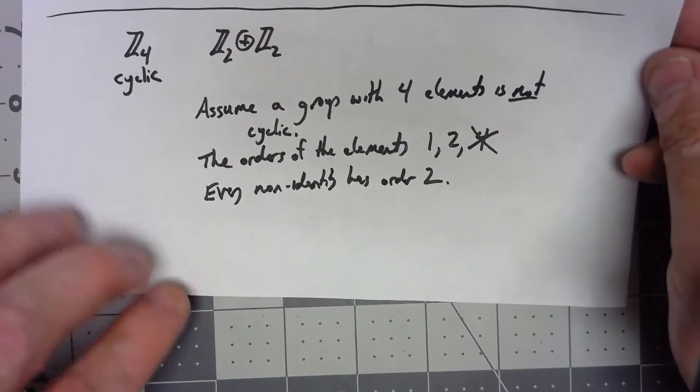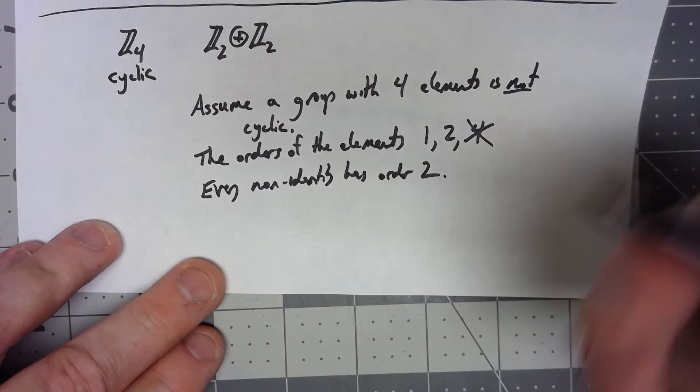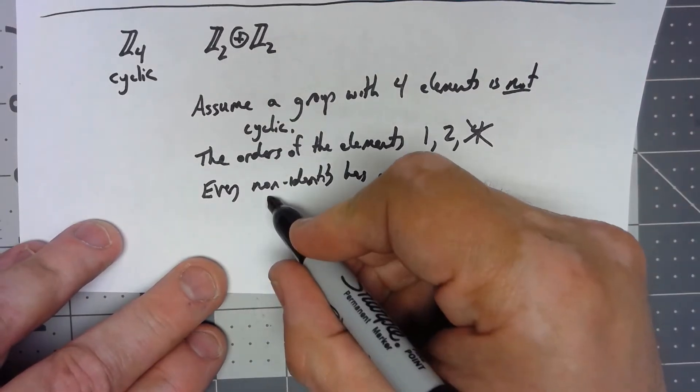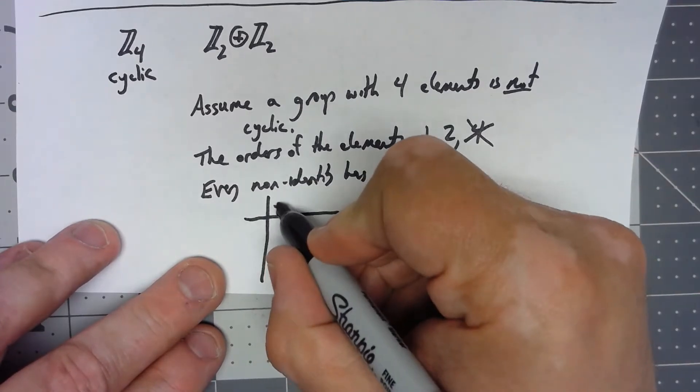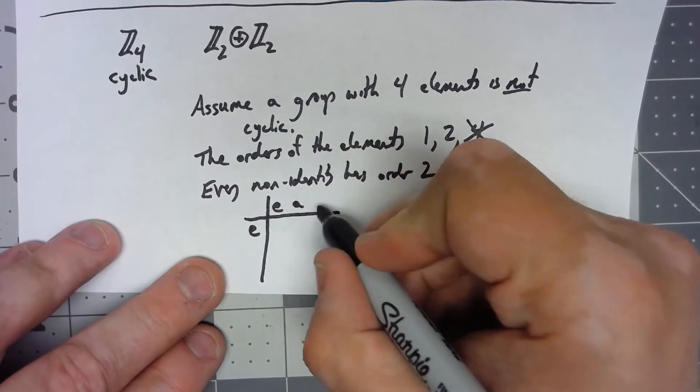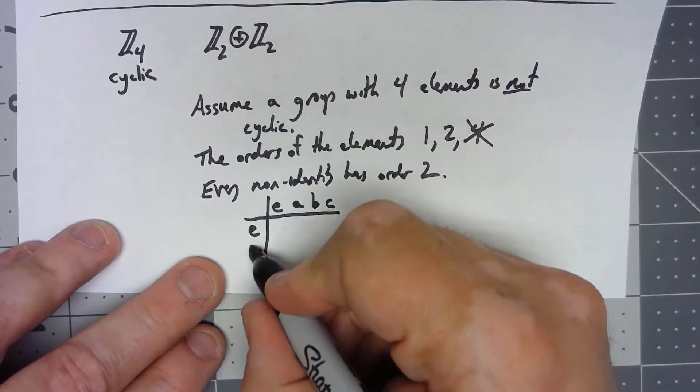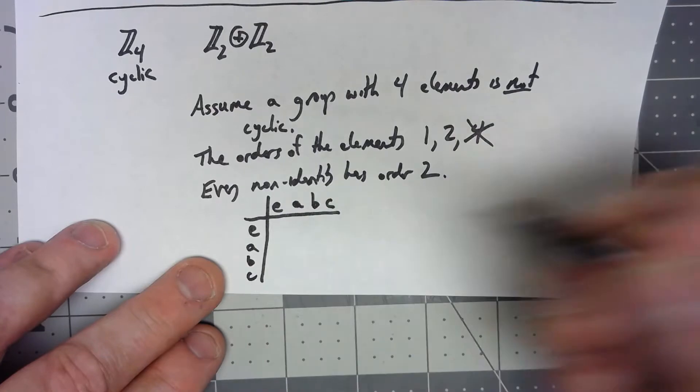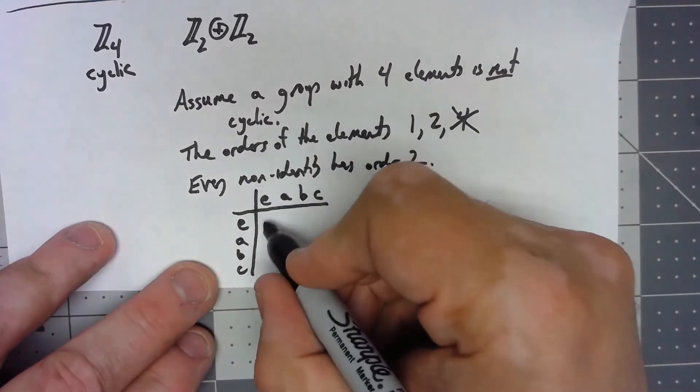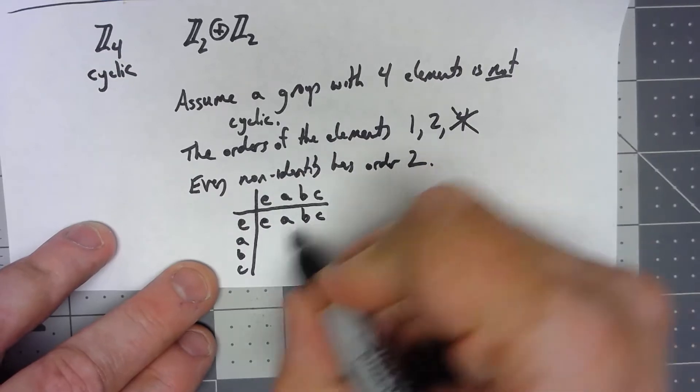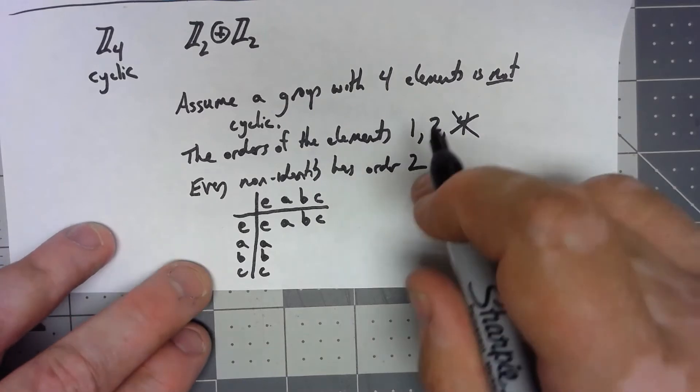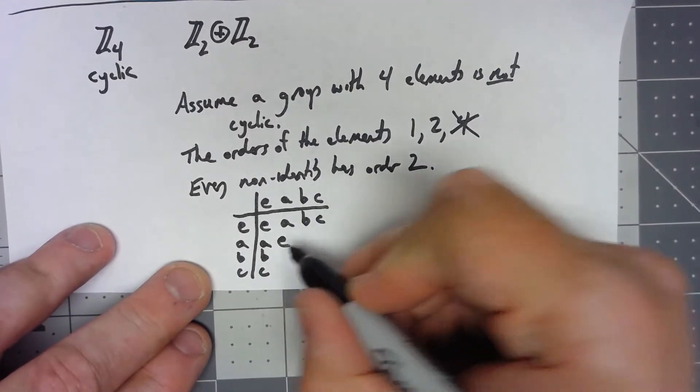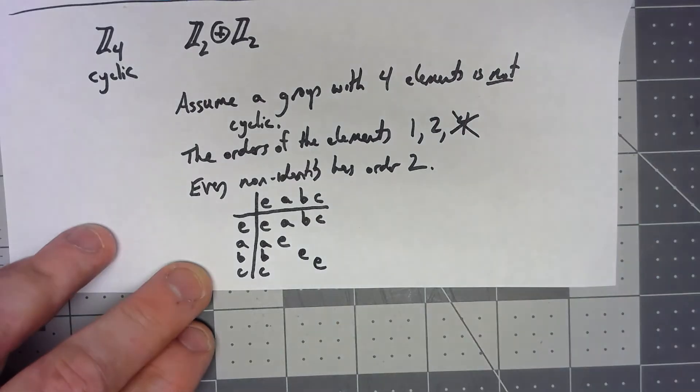Well, let's start thinking about a Cayley table then. We have to have an identity. We can say e, A, B, and C. We can fill out the identity times anything is that thing. Because they have order two, anything times itself has to be the identity.